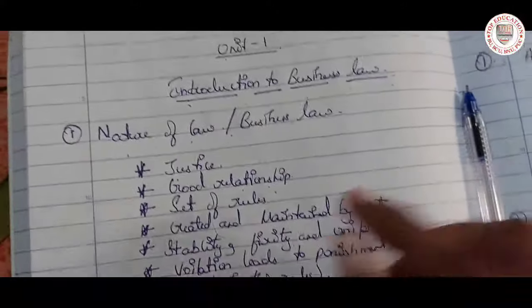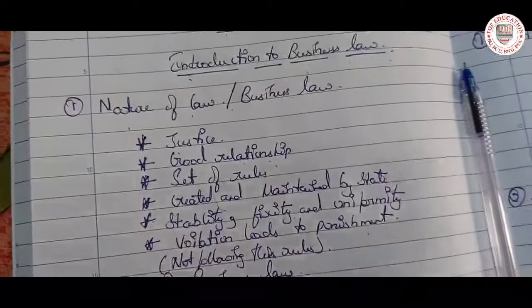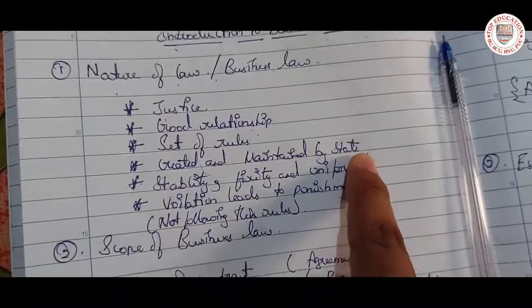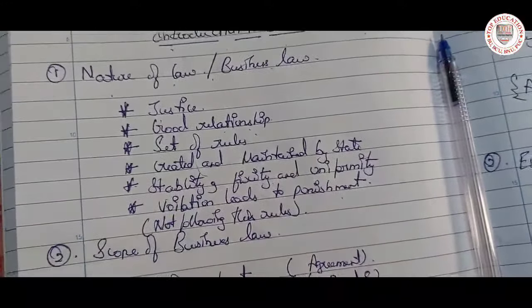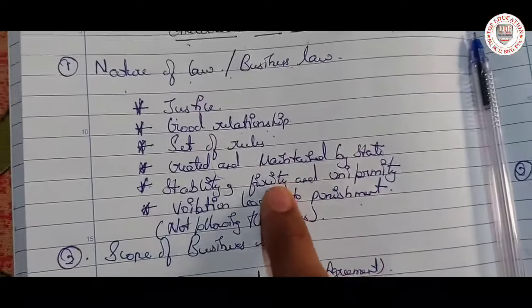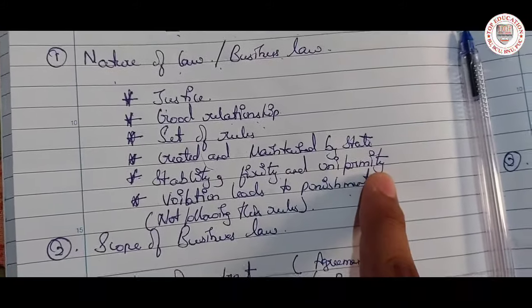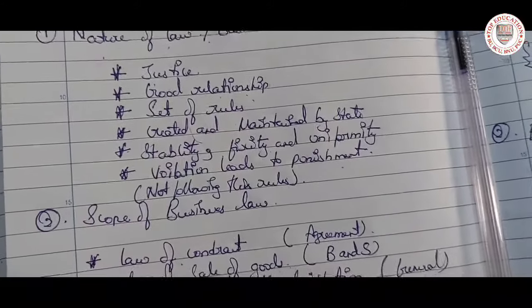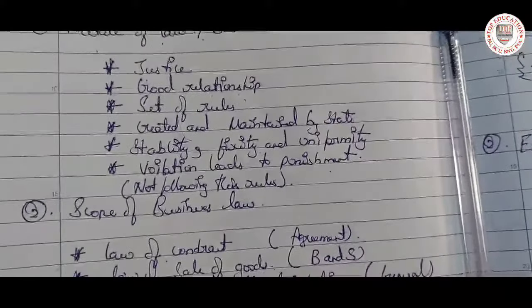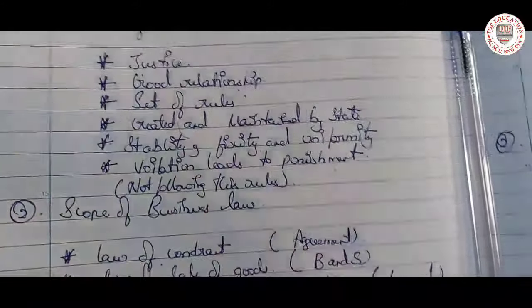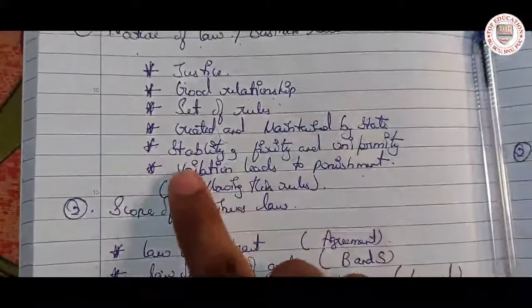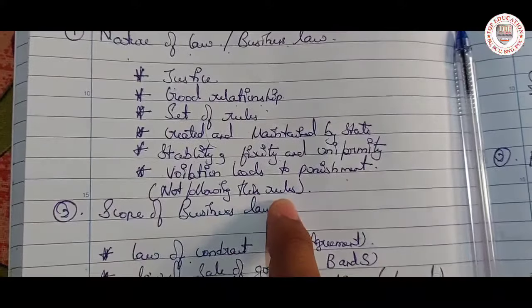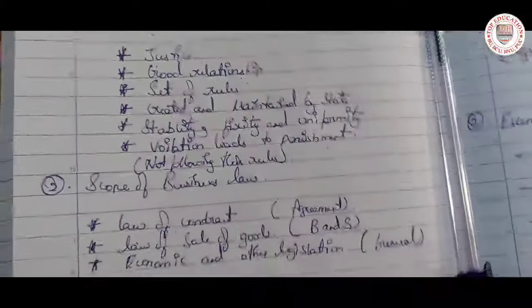Next is set of rules — these are the set of rules and regulations created and maintained by the state. Then stability — these rules are stable. Fixity — these rules are fixed. Uniformity — these rules are very unique and uniform; they are equal for everyone.